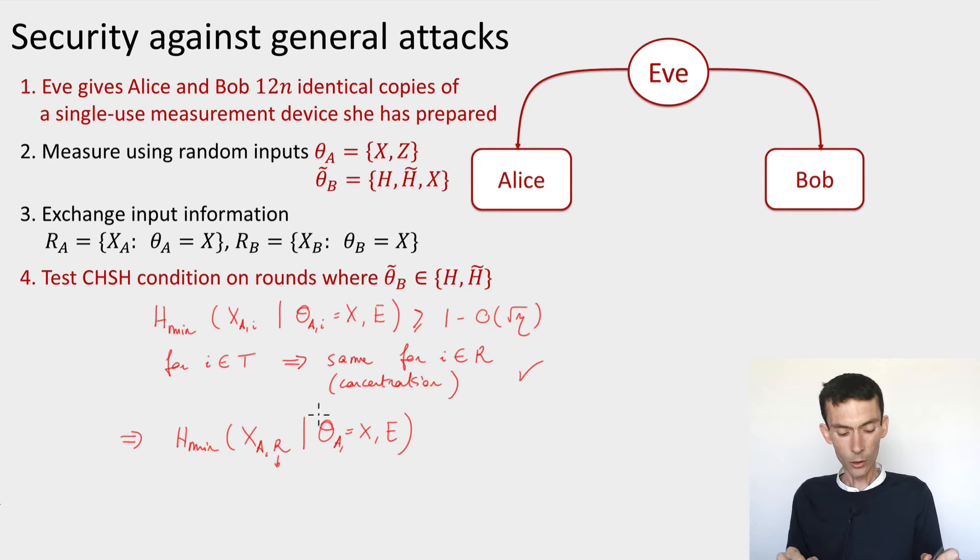So restricted to those rounds for which the basis that Alice uses is X and also the basis that Bob uses is X, these are the rounds that are used for the raw key. So we'd like to conclude that this, depending on how many rounds we're considering, some bound like this.